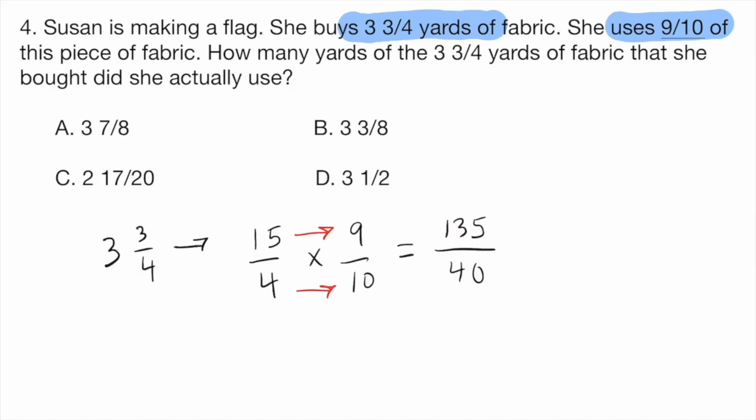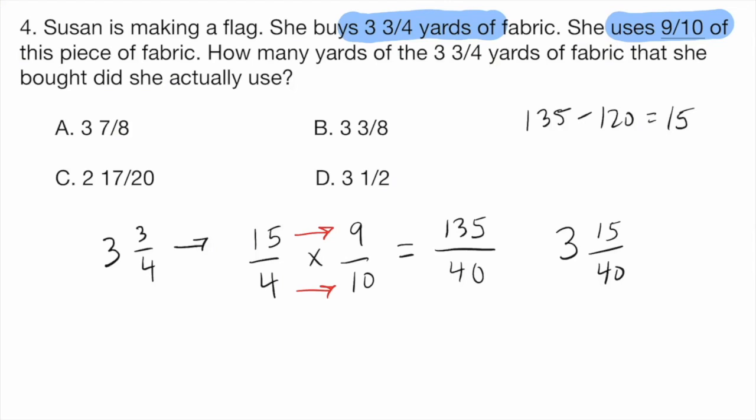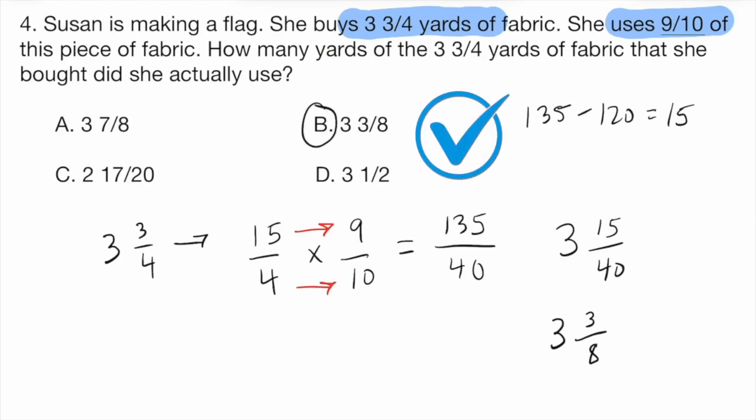And so just kind of doing some mental math here. We have 40, 80, 120. And then it would go to 160. So I'm going to stop at the 120. That's three times. So 40 goes into 135 three times. And so we had 135 and we kind of got rid of 120. So that leaves us with 15 left over in the numerator. So our answer right here is three and 15 fortieths. But that doesn't match any of our answer choices. And that's because we still need to simplify this value. And so what number goes into 15 and 40? That number is five. And so if we were to simplify this, five goes into 15 three times and five goes into 40 eight times. So our final answer is going to be choice B, three and three-eighths.